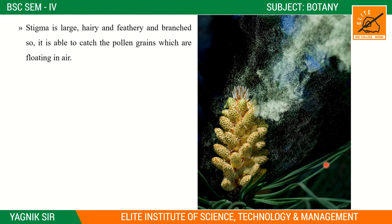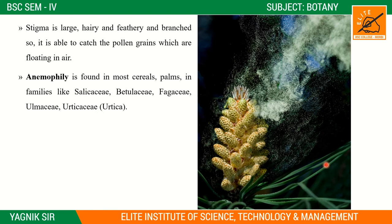The stigma in anemophilous plants is large, hairy, feathery, and branched so it is able to catch pollen grains floating in the air. Anemophily is found in most grasses, palms, and families like Salicaceae, Betulaceae, Fagaceae, Ulmaceae, and Urticaceae. It is a very primitive type of pollination.